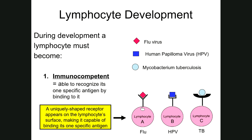These developing cells sprout on their surfaces a receptor that's kind of a random shape. Looking at lymphocyte A — a lymphocyte developing in the thymus — it has sprouted a receptor with kind of a V-shaped end. Lymphocyte B, another developing lymphocyte, develops a square-shaped receptor when it becomes immunocompetent. And lymphocyte C, which is specific for tuberculosis bacterium, sprouts a receptor of a different shape when it becomes immunocompetent.